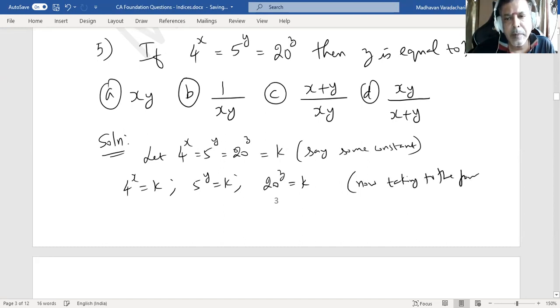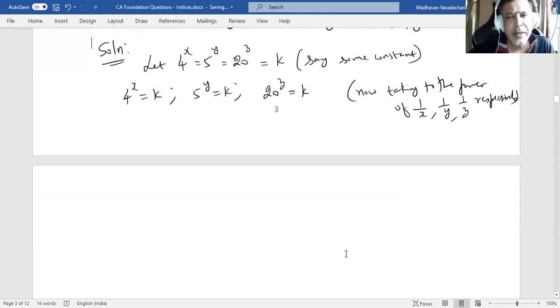Now taking to the power of 1 by x in the first one, same way 1 by y and 1 by z respectively. What I'm trying to do is eliminate this power x, power y, and power z on the left side.